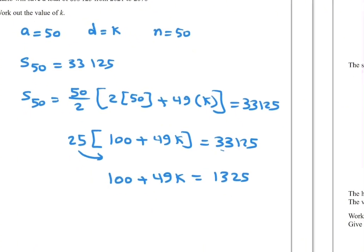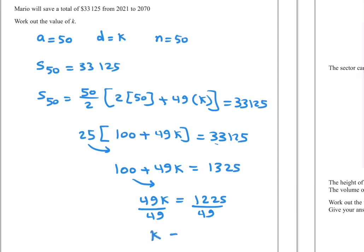Now subtract 100, or transpose 100 to the other side by subtraction. So 49k equals 1,225, divide by 49. So k equals 25.